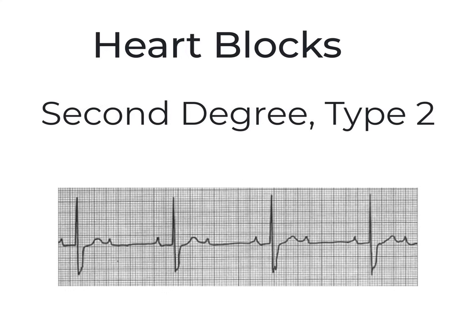With a second degree type 2, there may be no pattern to the dropped beats, but every time the AV node does its job, it does so consistently, meaning the PR interval is the same. But sometimes the impulse doesn't go through at all.